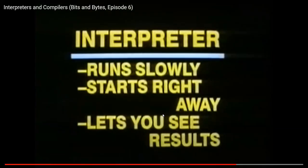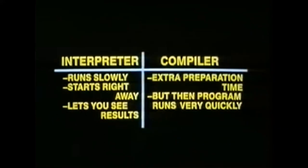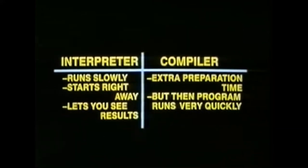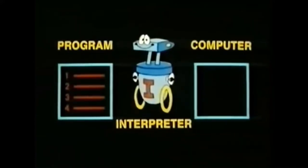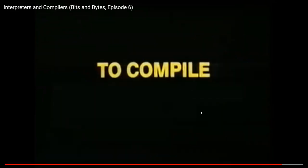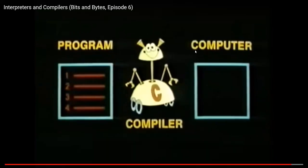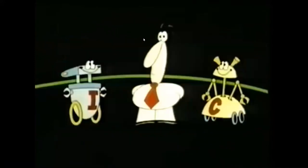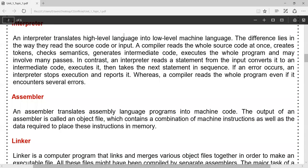This analogy comes very close to the way interpreter and compiler programs actually work with computers. An interpreter runs slowly, starts right away, and lets you see how things are going. Whereas a compiler takes extra preparation time before your program can run, but then lets it run very quickly and efficiently. To help you remember: 'inter' means 'between' — the interpreter is always between your program and the computer, translating line by line. 'Compile' means to pile together — a compiler piles together your entire program and translates the whole thing all at once.